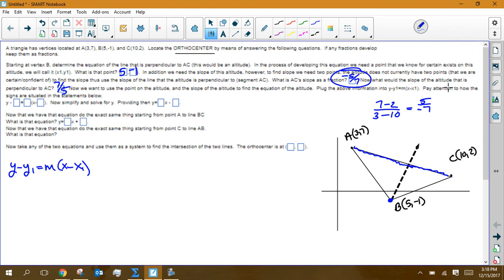The next part says, now use that information that you just provided, that 7 fifths and that point right there, and create the equation of a line. So I'm going to go y minus negative 1 is equal to 7 fifths x minus x1, which is 5. So that's kind of what you're writing in here.